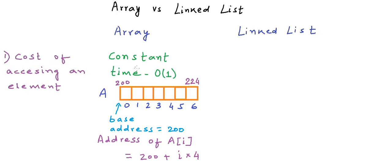So accessing an element in an array is O(1) in terms of time complexity. If you are not aware of big O notation, check the description of this video for a tutorial on time complexity analysis.